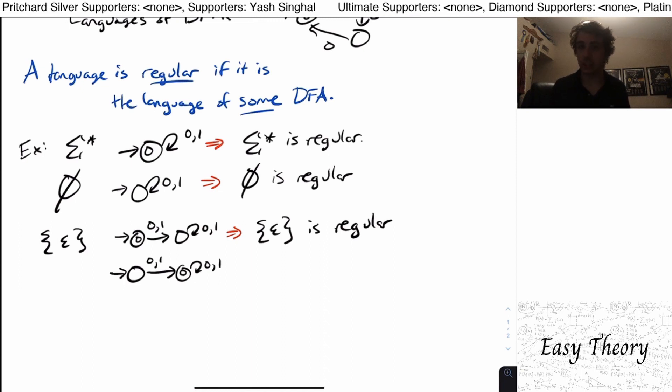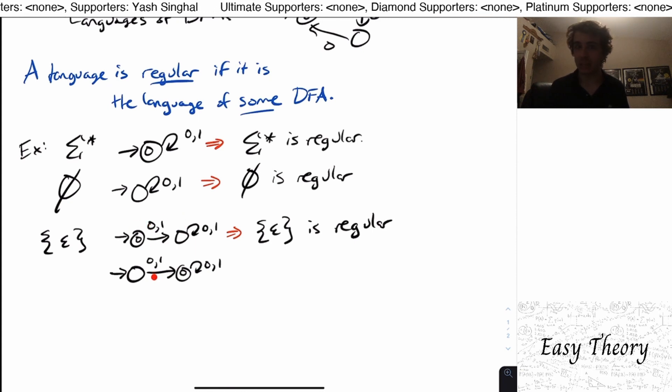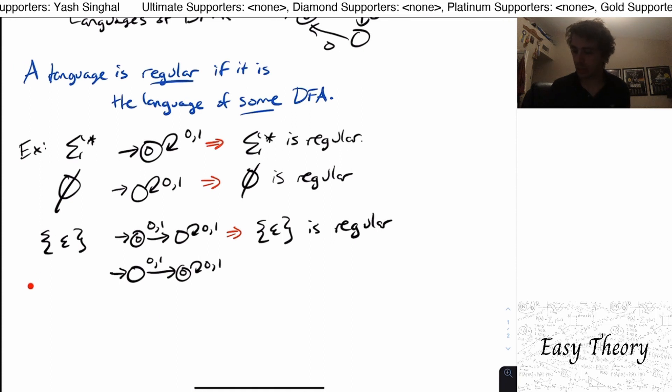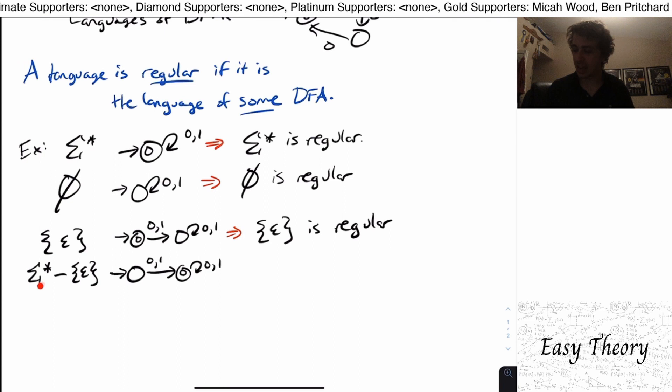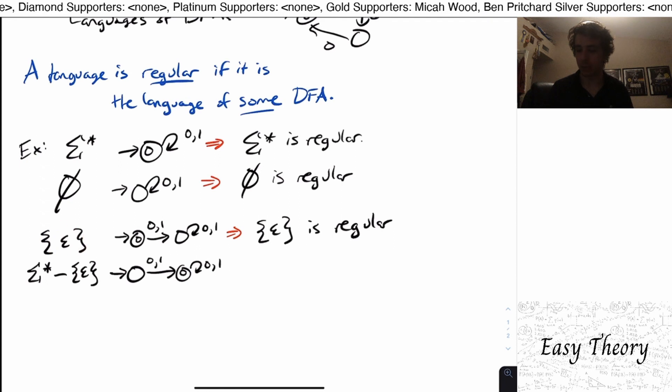But what this is, is just taking every single string that is accepted here and making it not accept over here, and vice versa. So this language is actually equal to sigma star minus set minus the one that we had before, aka every possible string, take away the ones in the language that we just talked about right here.